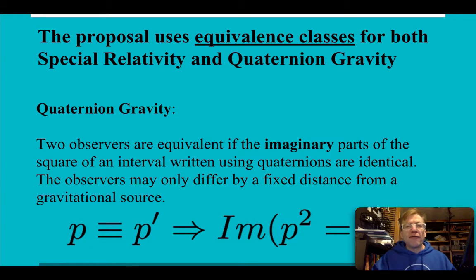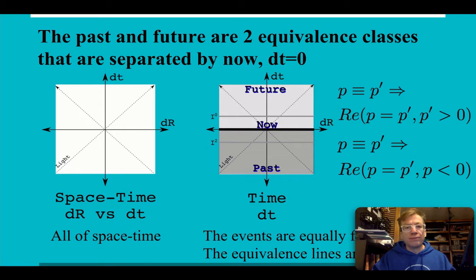And as a matter of fact, the space times time terms, the ones that don't agree, can be used to figure out exactly how the two observers are moving compared to each other, which is actually kind of useful. So why don't people do this? Oh, that's right. People hate quaternions. I forgot. So for quaternion gravity, what did I change here? The only thing I changed here was going from saying the real parts were equal to saying the three imaginary parts were equal. So two observers are equivalent if the imaginary parts of the square of the interval using the quaternion are identical. The two observers may only differ by a fixed distance from a gravitational source.